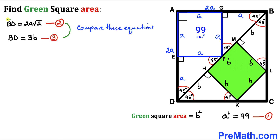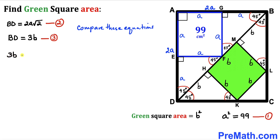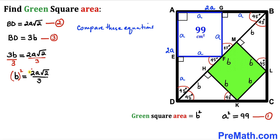Comparing equations 2 and 3, since both equal BD: 3b = 2a√2. Dividing both sides by 3 gives b = (2a√2)/3. Squaring both sides: b² = (8a²)/9.